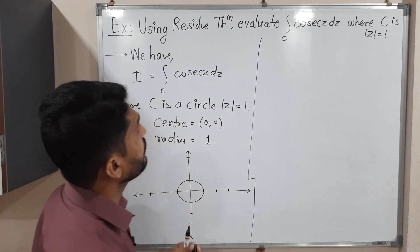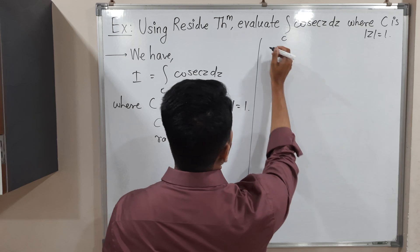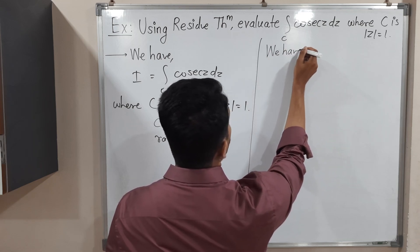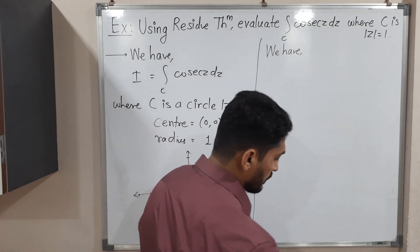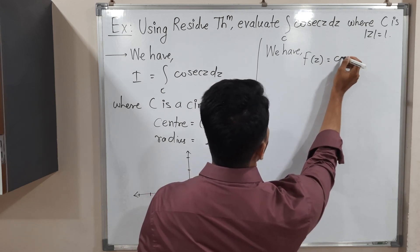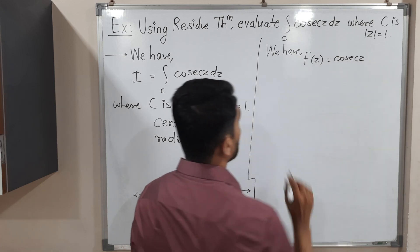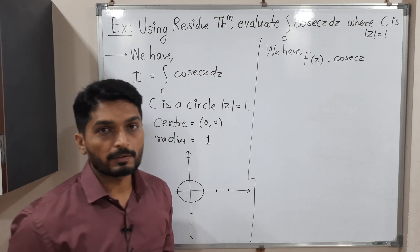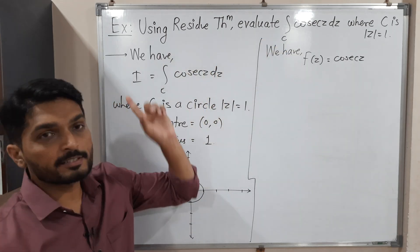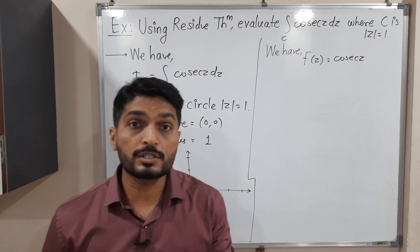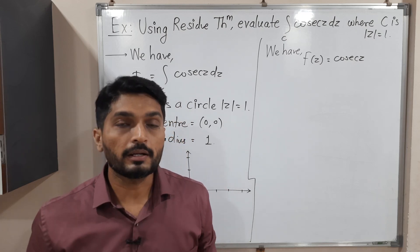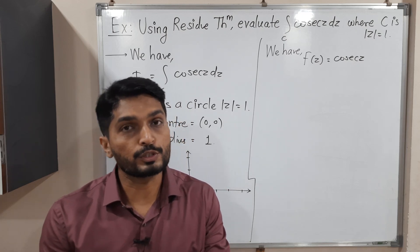The function we have is f(z) = cosec(z). We have to solve this integration with the help of the residue theorem — that is, Cauchy's residue theorem. Let us recall its statement and then plan how to solve this problem.